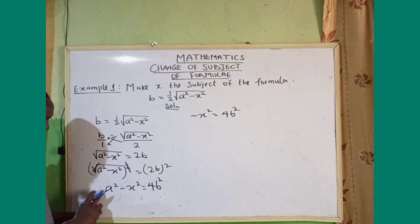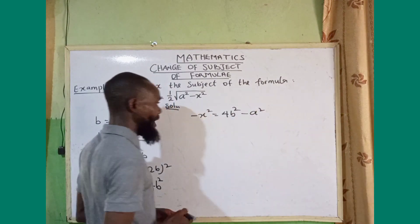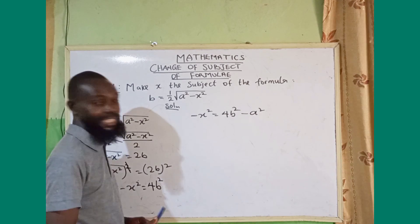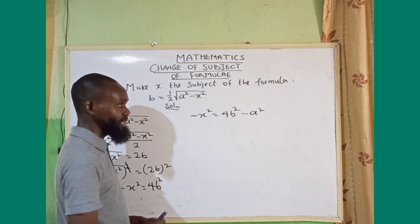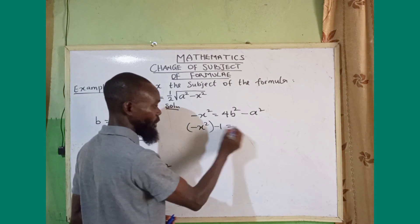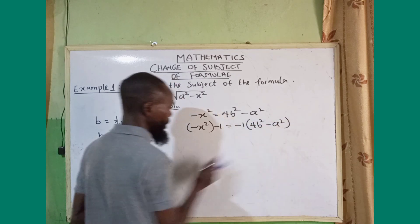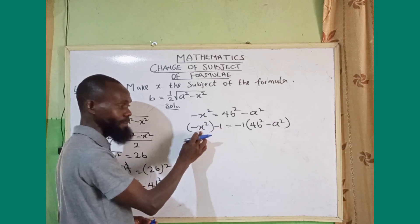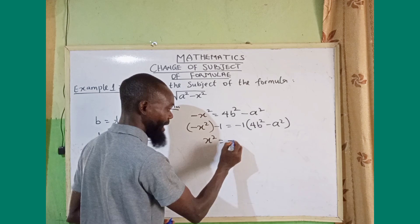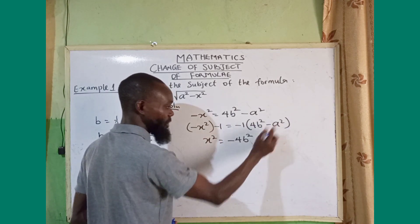When the positive a squared crosses to the other side it changes to minus a squared. Now because of the negative, I can multiply both sides by negative one. Minus x squared times minus one gives plus x squared. Negative one times 4b squared gives minus 4b squared, and negative one times minus a squared gives plus a squared.